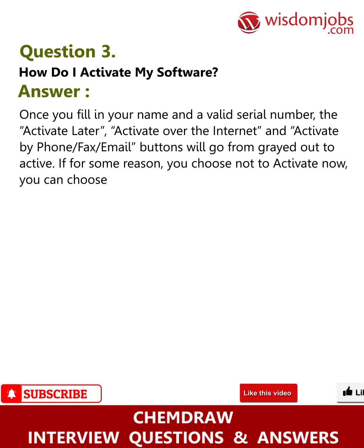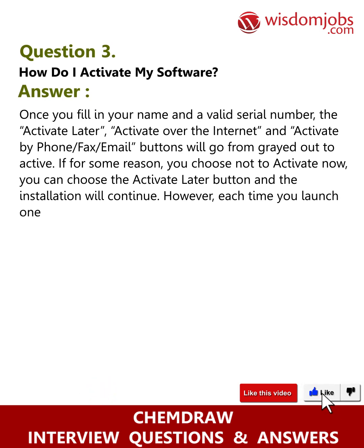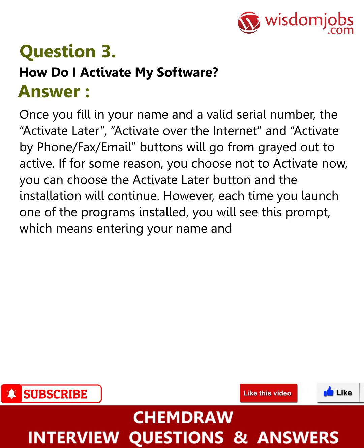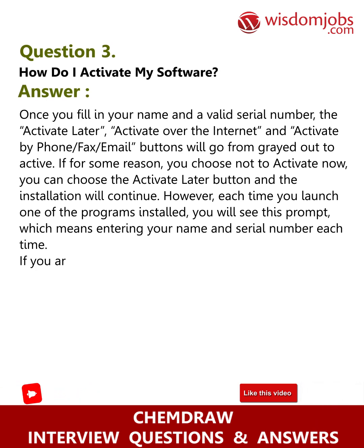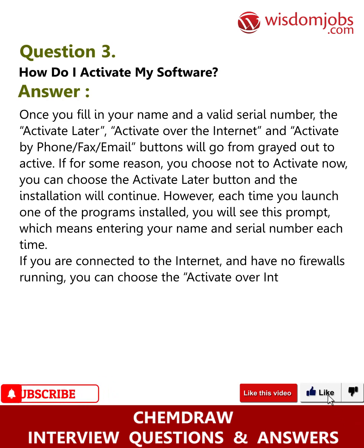If for some reason you choose not to activate now, you can choose the Activate Later button and the installation will continue. However, each time you launch one of the programs installed, you will see this prompt, which means entering your name and serial number each time. If you are connected to the internet and have no firewalls running, you can choose the Activate Over Internet button.